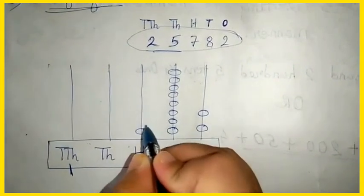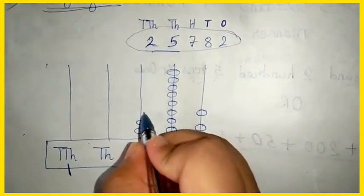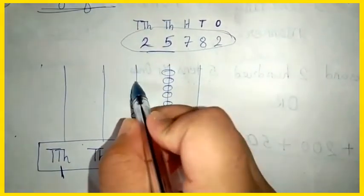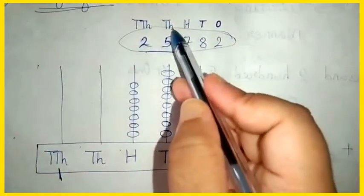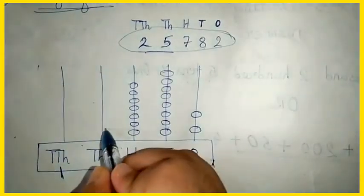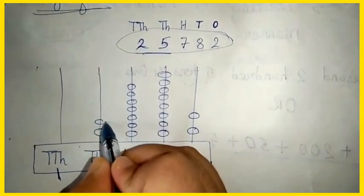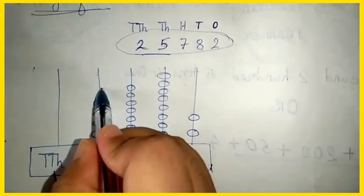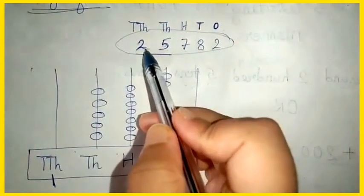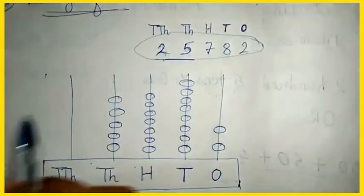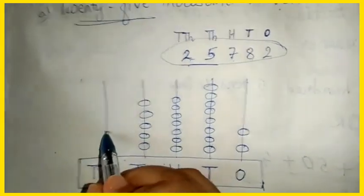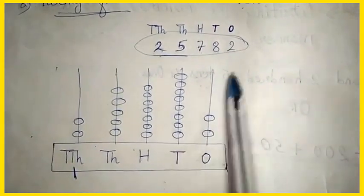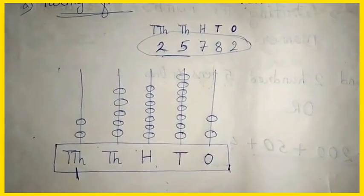In the hundreds place there will be 7 beads: one, two, three, four, five, six, seven. In the thousands place the digit is 5, so we draw 5 beads: one, two, three, four, five. In the ten-thousands place the digit is 2, so there will be 2 beads: one, two. This is how we represent five-digit numbers on an abacus.